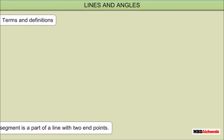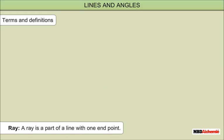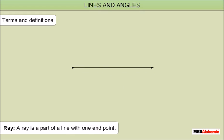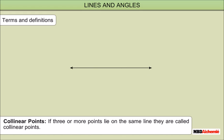Terms and Definitions. A line segment is a part of a line with two end points. This line segment AB is denoted by AB bar. A ray is a part of a line with one end point. Ray AB is denoted by its corresponding symbol.